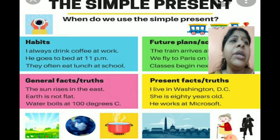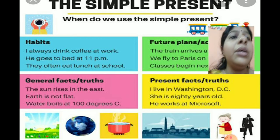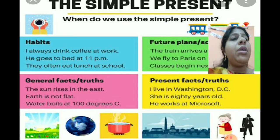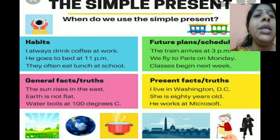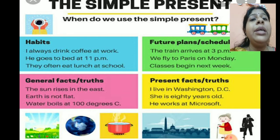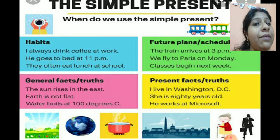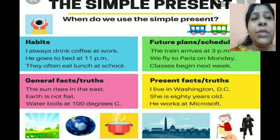Here are some other instances when we use the simple present tense. For habits: 'I always drink coffee at work,' 'He goes to bed at 11 p.m.,' 'They often eat lunch at school.' These are habits which we follow in our day-to-day life.